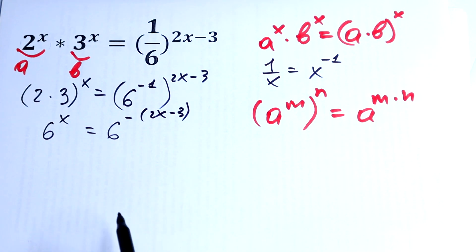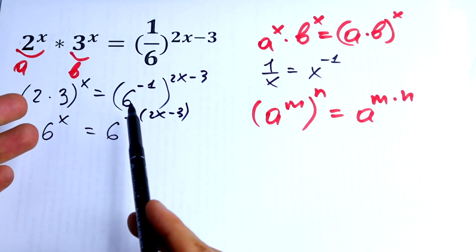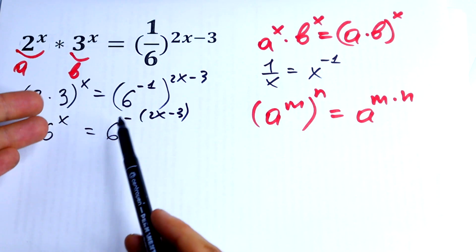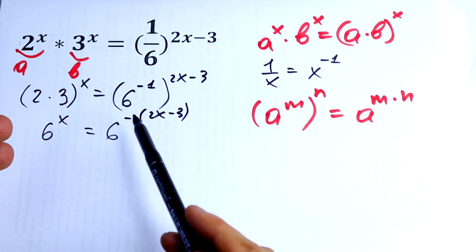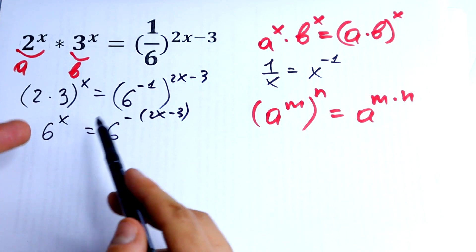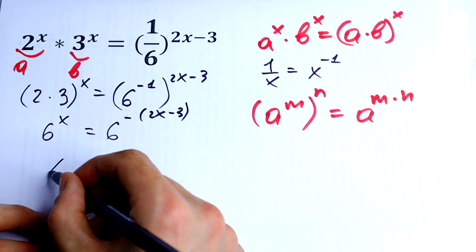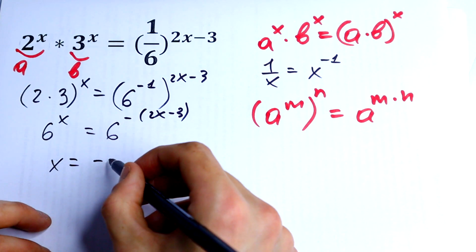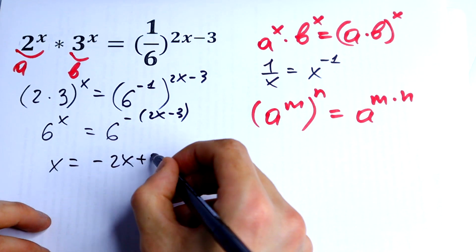Now we have the same base but different exponents. Since the bases are equal, we can set the exponents equal: x equals -2x + 3.